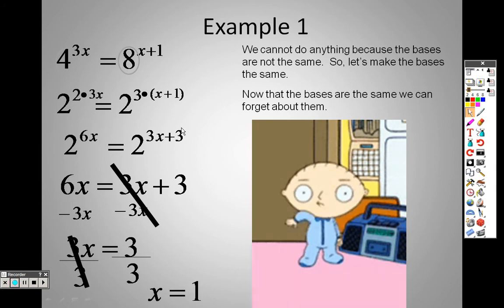And once again, you can check your answer like anything else. Plug a 1 in there. 3 times 1 is 3, so this is 4 to the 3rd. Plug in a 1 here. 1 plus 1 is 2, so 8 squared. Well, 8 squared is 64. 4 to the 3rd power is 64, so it does actually work for both answers.